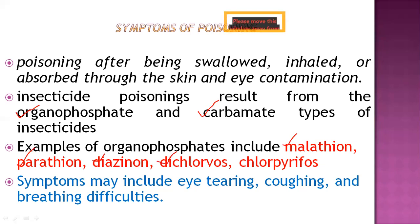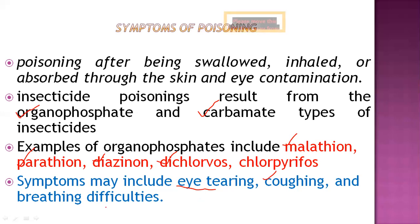The symptoms generally observed in humans include eye tearing and difficulty breathing — the person is not able to breathe properly. If we want to diagnose this pesticide poisoning, it is based on the different symptoms that occur in the person.